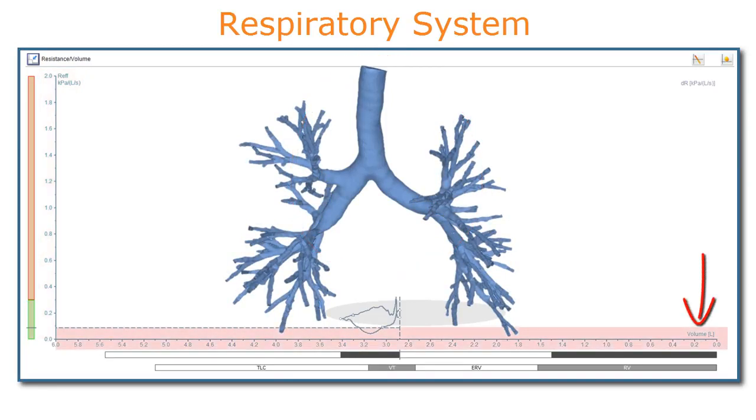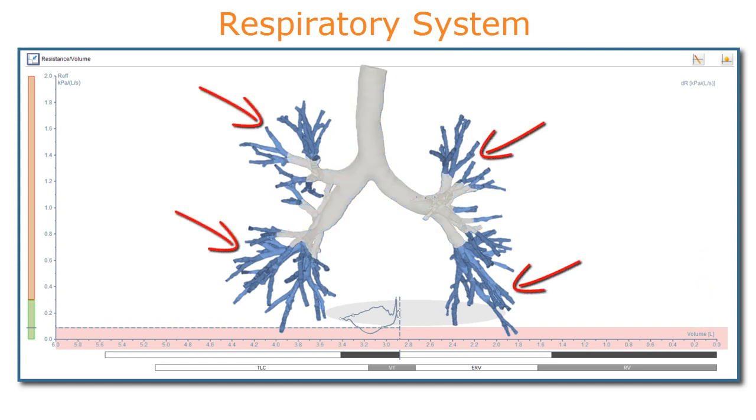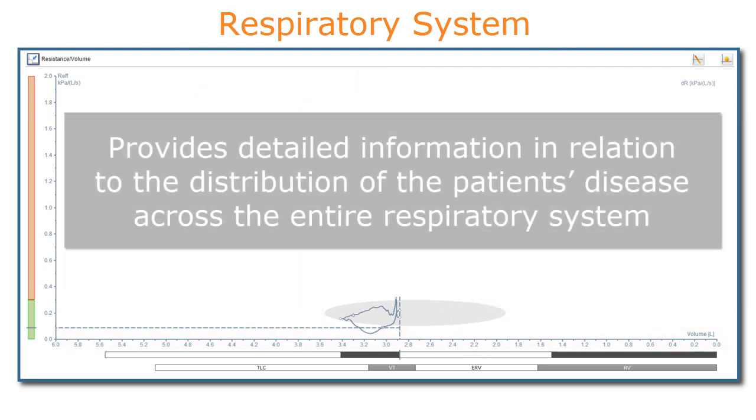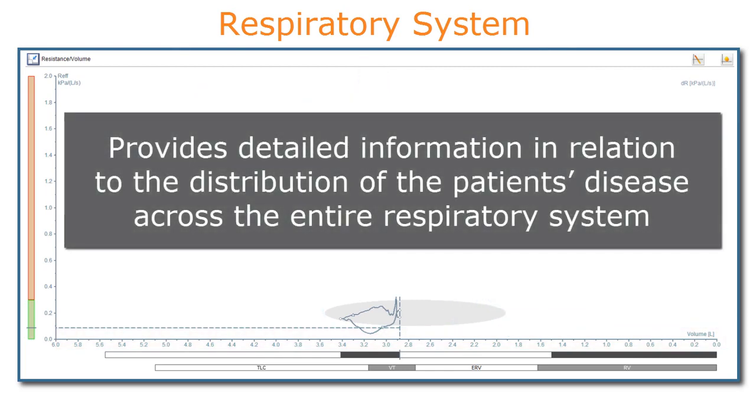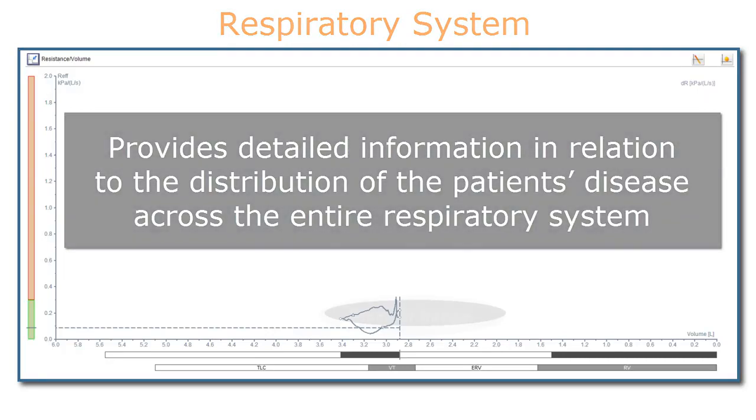The measured lung volumes shown on the x-axis are exclusively dependent on the peripheral characteristics of the respiratory tract. Knowing this, we can say that the resistance-volume graph can provide more detailed information in relation to the distribution of the patient's disease across the entire respiratory system.